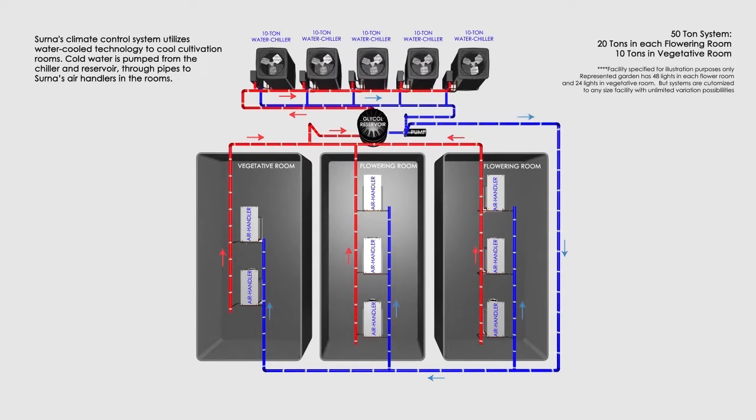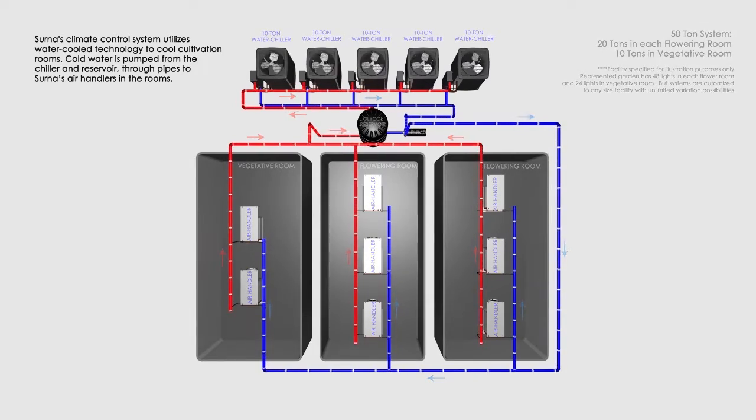CERNA's climate control system utilizes water-cooled technology to cool cultivation rooms. Cold water is pumped from the chiller and reservoir through pipes to CERNA's air handlers in the room.